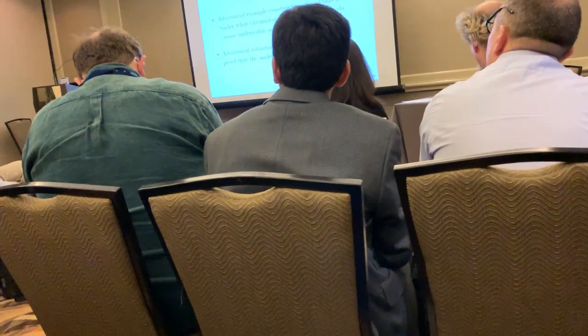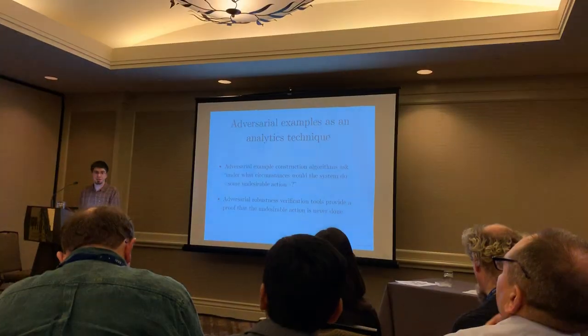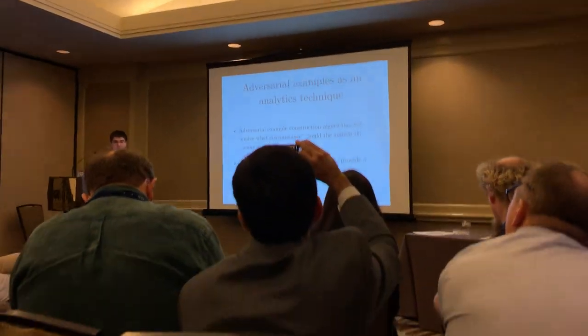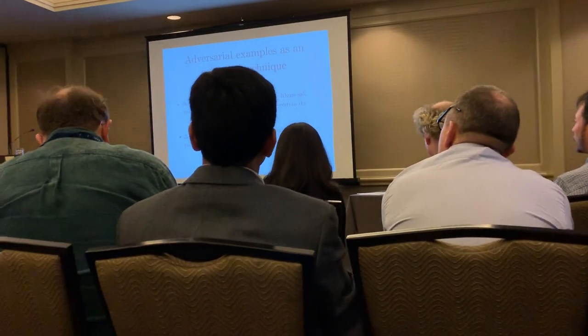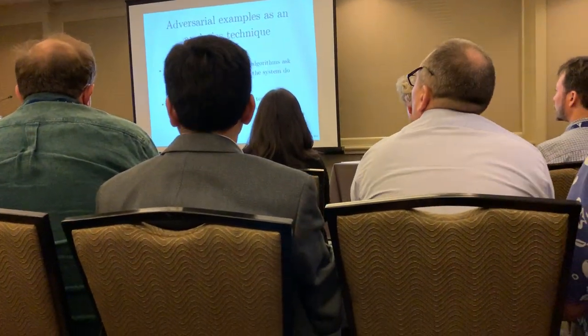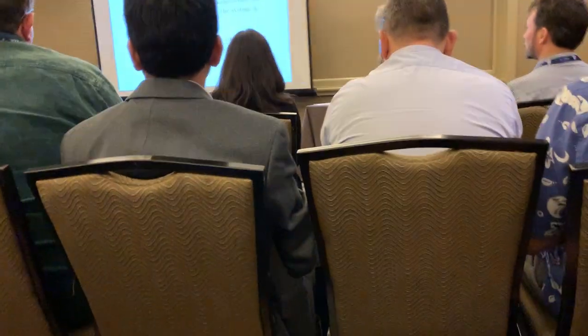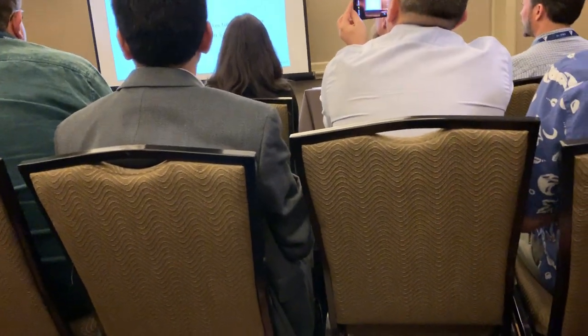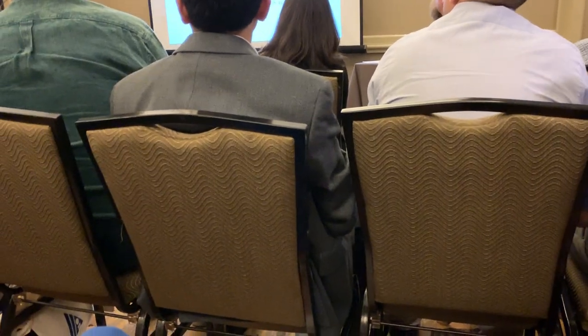Adversarial robustness also develops a set of analytic techniques. When you run an adversarial example construction algorithm, you're essentially asking: under which circumstances would the system do something undesirable — like say a panda is a gibbon? Making an adversarial example identifies a specific case where undesirable behavior happens. The adversarial robustness literature also develops verification methods that can prove no adversarial examples exist in certain circumstances, guaranteeing dangerous behavior does not happen under those conditions.